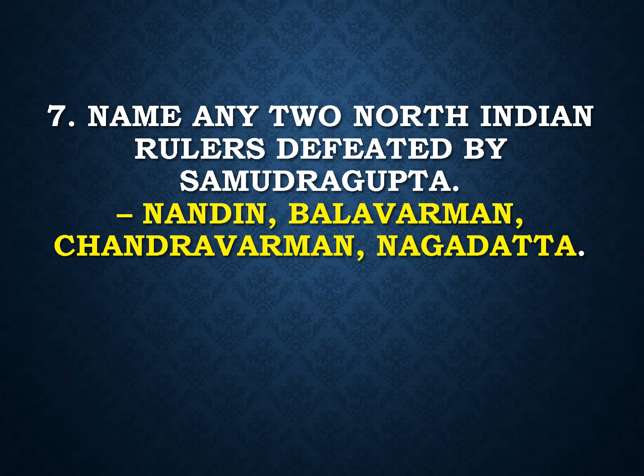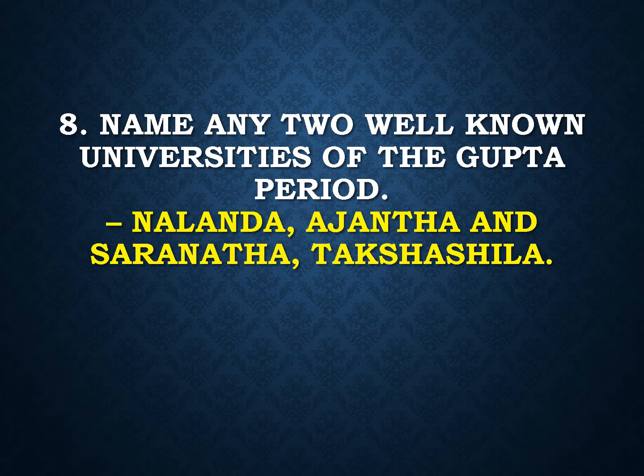Name any two North Indian rulers defeated by Samudra Gupta. Answer: Nandin, Balavarman, Chandravarman, Nagatatta. Name any two well-known universities of the Gupta period. Answer: Nalanda, Ajanta and Sarnath, Takshashila.